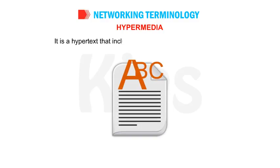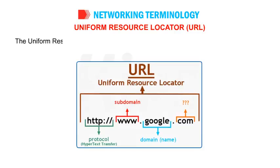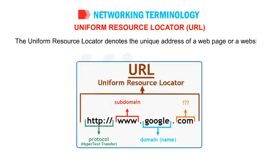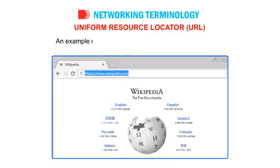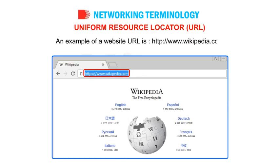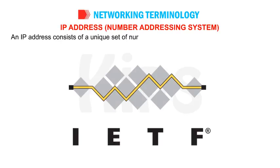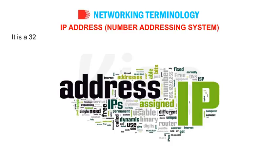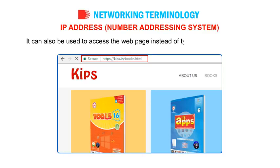Hypertext: Hypertext is text that is set up with a special feature of linking to another document or web page. It can be easily identified on a web page as it appears underlined and is usually in blue color. Hypermedia: Hypermedia is a hypertext that includes text, graphics, sound or video. Uniform Resource Locator (URL): The URL denotes the unique address of a web page or a website. To open a web page, its URL is entered in the address bar of a web browser. An example of a URL is: http://www.wikipedia.com. IP Address: An IP address consists of a unique set of numbers provided to each computer by IETF (Internet Engineering Task Force). It is a 32-bit numeric address containing a set of four numbers ranging from 0 to 255, separated by periods. Examples of IP addresses are 205.198.0.1 and 132.45.10.6.